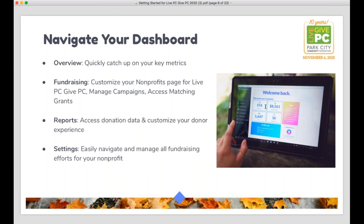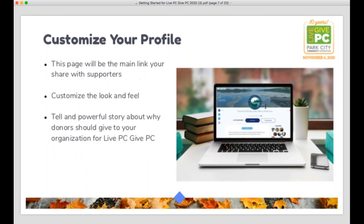Next, you'll have a Reports tab. This is where you'll get all of your donor data. Donation data will be available to your organization in real time during the campaign as soon as donations open, and you can always view or download the information at any time. You'll also have other reports here — offline donations report, donor retention report, and disbursement report. And finally, the Settings tab at the bottom is where you're going to manage and update all of your settings, including the admins for your organization.